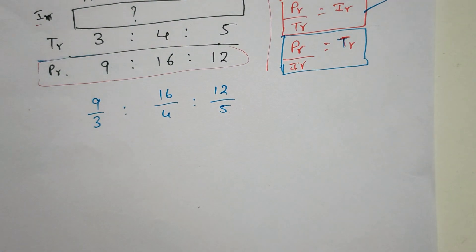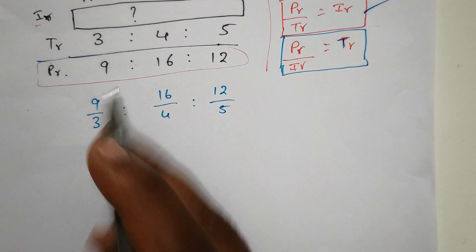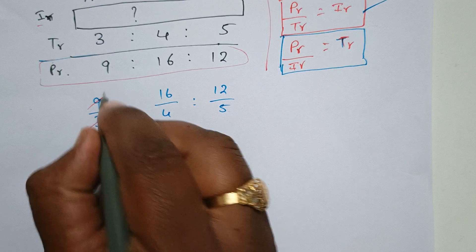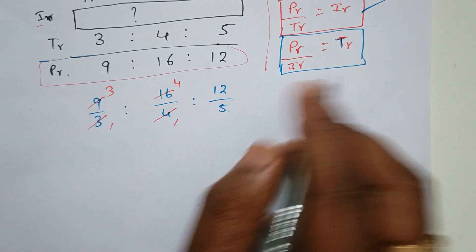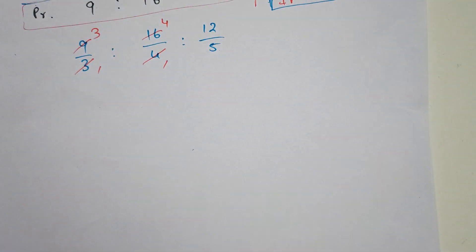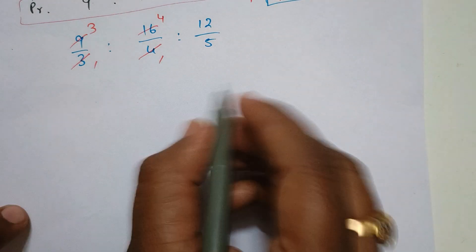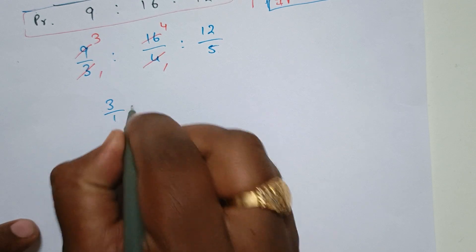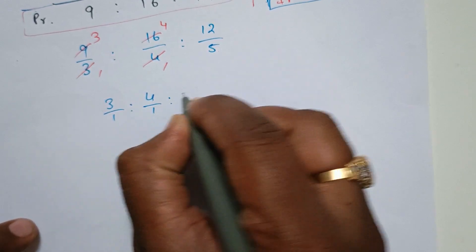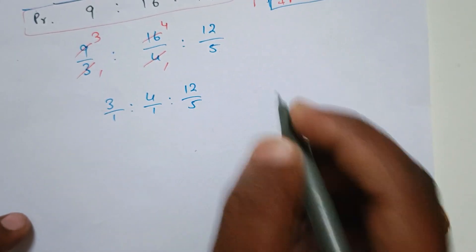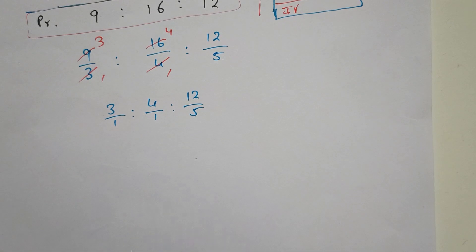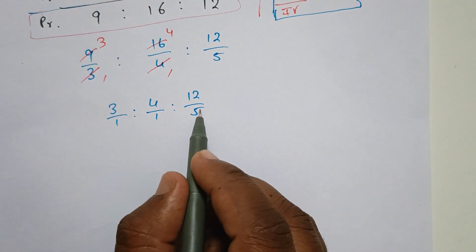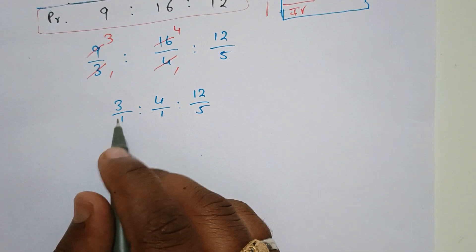So now we have to cancel. 9 divided by 3 equals 3; 16 divided by 4 equals 4; 12 divided by 5 remains. This is LCM. The LCM of the denominators is needed.